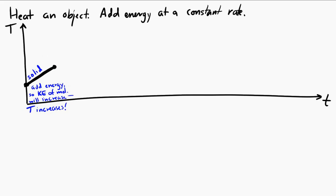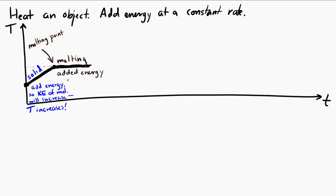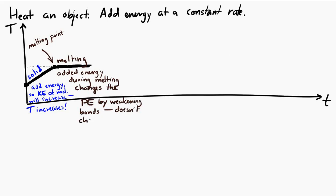At the melting point, the substance can change phase, but it doesn't happen all at once — it slowly transitions from solid to liquid. During this transition, the kinetic energy per molecule does not increase. Instead, the energy being added goes into changing the potential energy — weakening the bonds between molecules. Because you're changing potential energy and not kinetic energy, the temperature doesn't change during the phase change. The temperature is constant throughout the melting process.